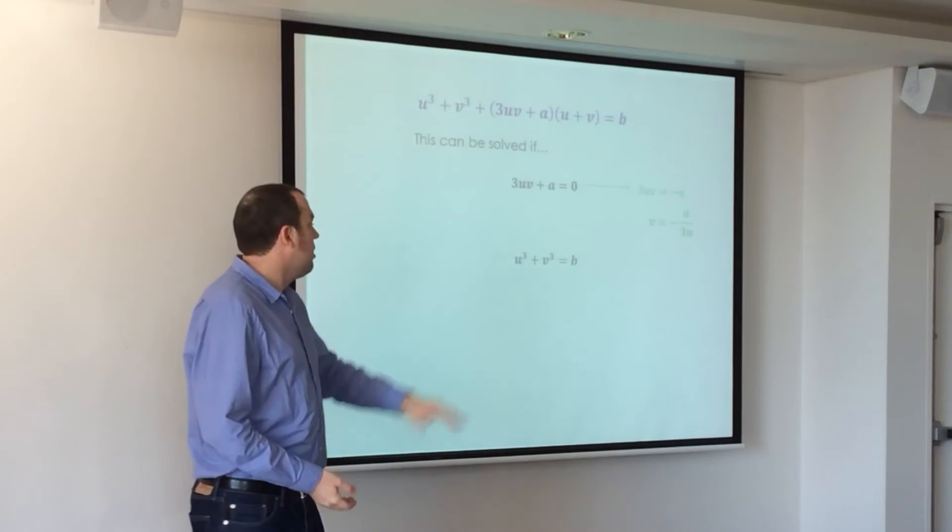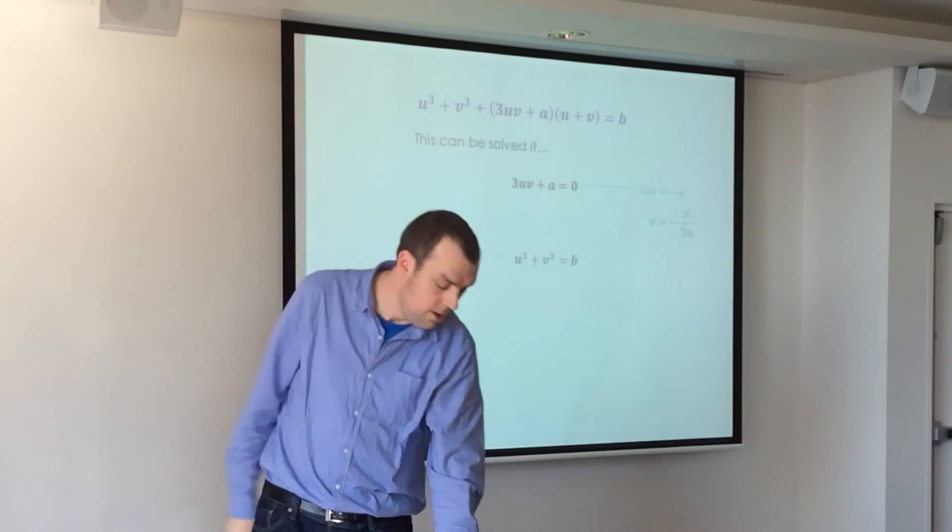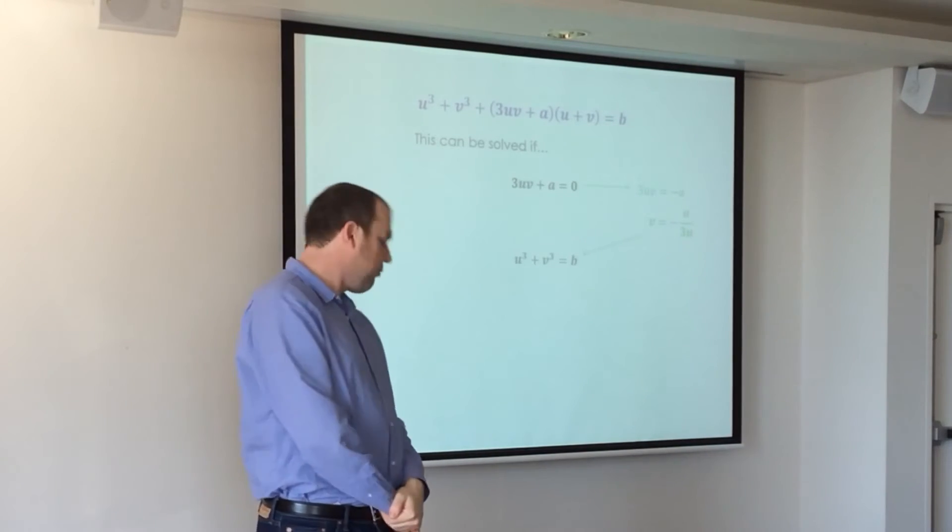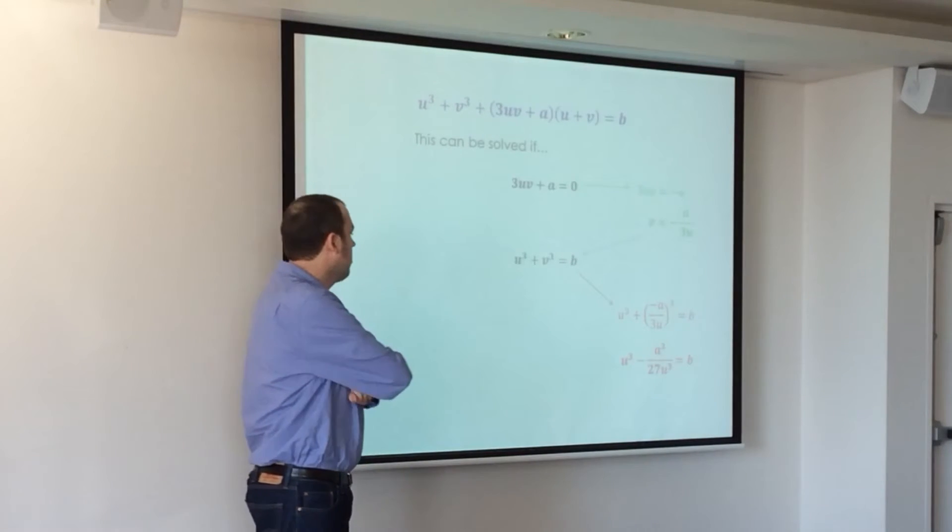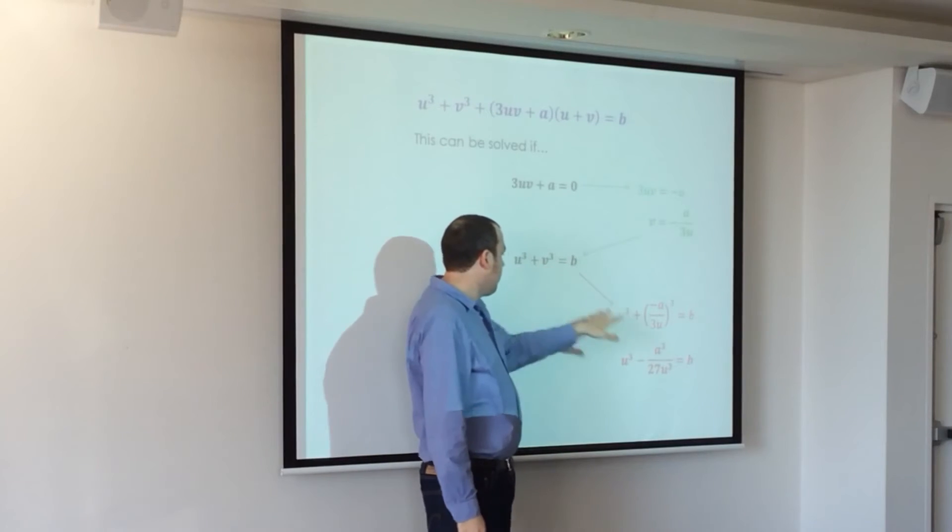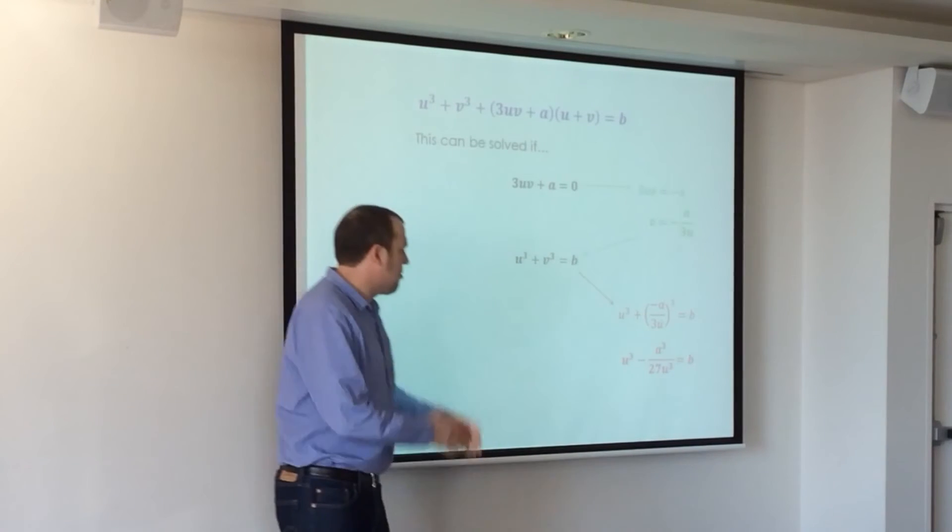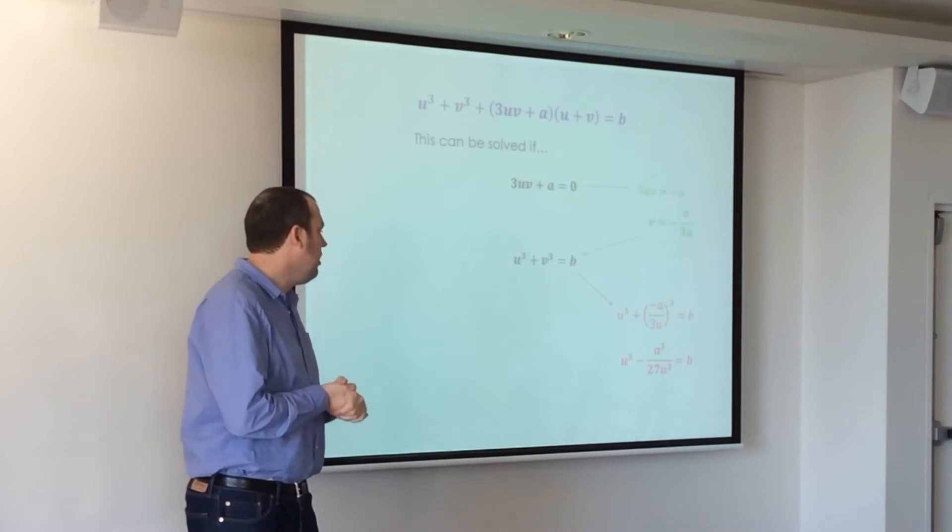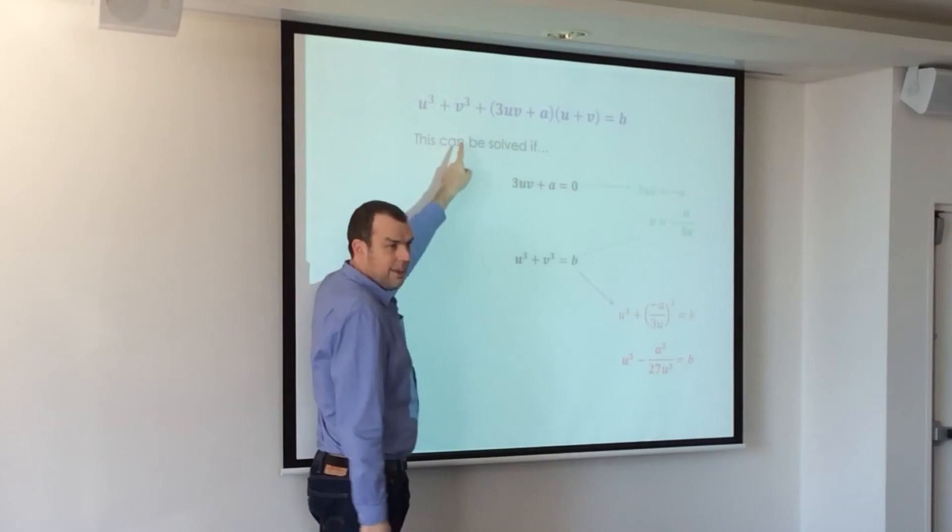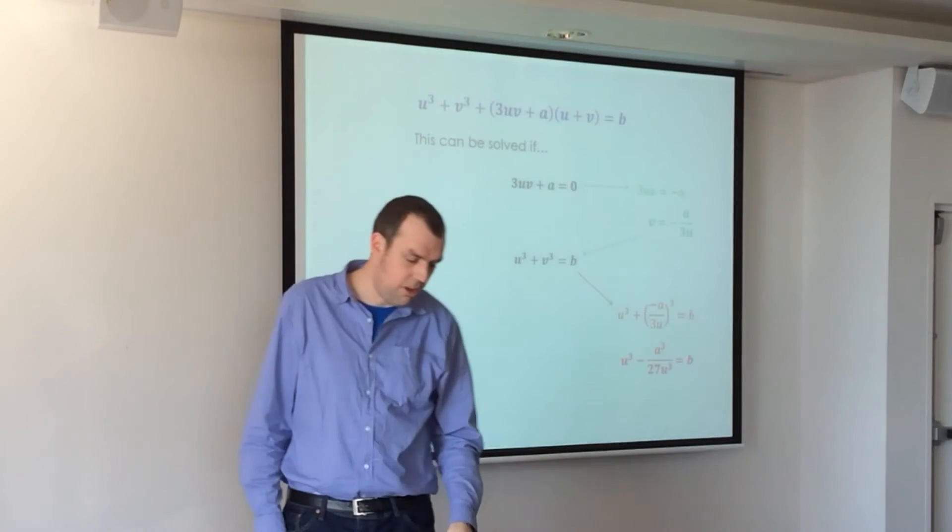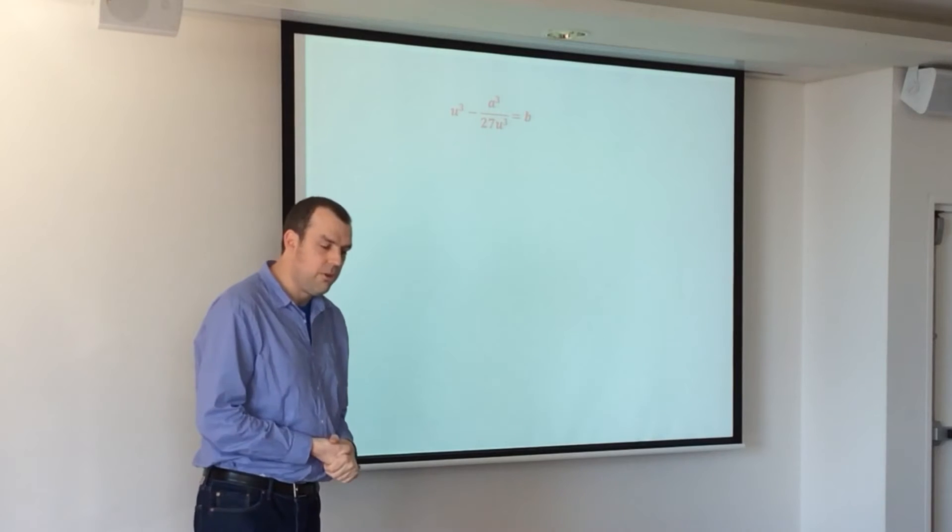And so we can make v the subject there. So v equals negative a over 3u. So we can substitute it into there, because they both have to be true, and arrive at this. So u cubed plus our value for v cubed equals b. Expand that power, and we get that. Now, I'll take that over that any day, right? So it was progress. And this is a much easier question. What can we do with this?